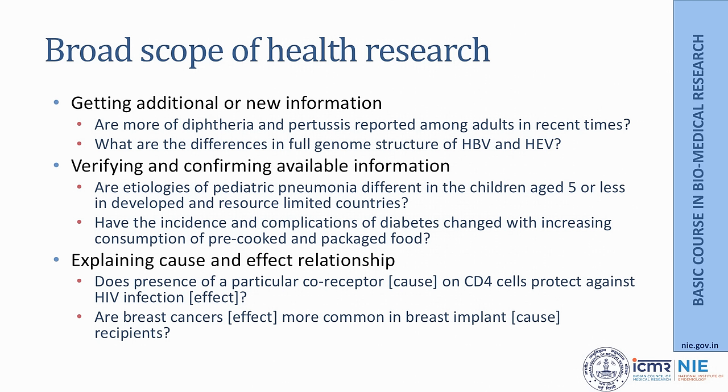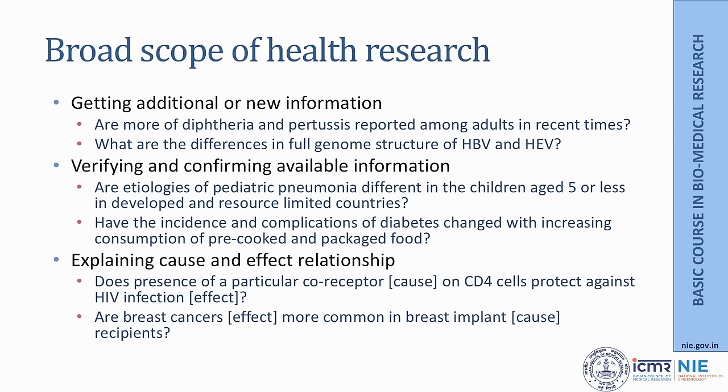When we talk about the scope or objectives of health research, they could be many. Most of the time we think of research as creating new information, but we sometimes also get additional information on something which already exists. For example, are more diphtheria and pertussis cases reported among adults in recent times? We used to know these were diseases of childhood, but now cases in adults are also getting reported. Similarly, somebody might want to do research to find out the full genome structure of hepatitis B virus and hepatitis E virus, which could have implications for understanding pathogenic impact and development of vaccines against those viruses.